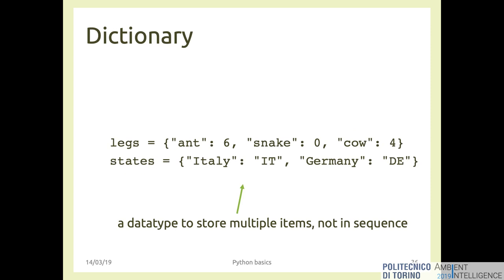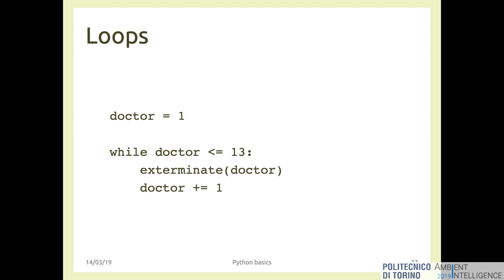We also met the dictionary, which is a data structure to store multiple items, but these are not items in sequence — there is no first or second element. They are pairs of elements: the first is always called the key, is immutable and a string, and the second is the value, which could be an integer, number, or string, and can be changed once created. For example, animals with their leg counts, or country names with their short codes.